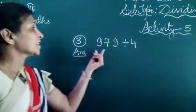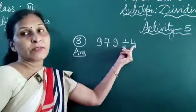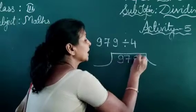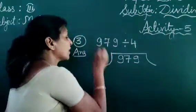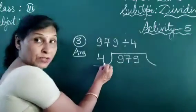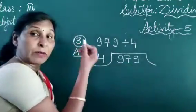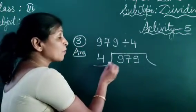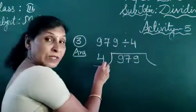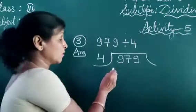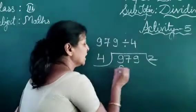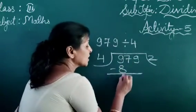Now the next is 979 divided by 4. 979 is the dividend, we write it here, and 4 is the divisor, we write here. Now we see the single digit — that is not equal to the divisor. So we tell the table of 4, and we know 9 does not come in the table of 4. We see the nearest number: 4 ones are 4, 4 twos are 8, 4 threes are 12 — 3 times is more than this. So we can take 2 times: 4 twos are 8. Subtract it — then 1 comes.